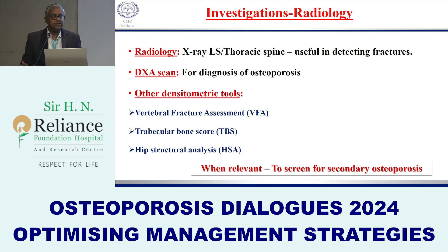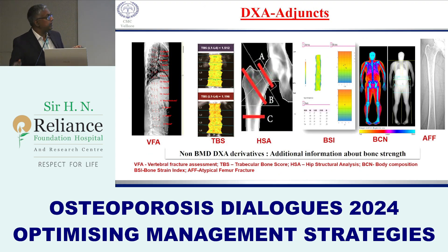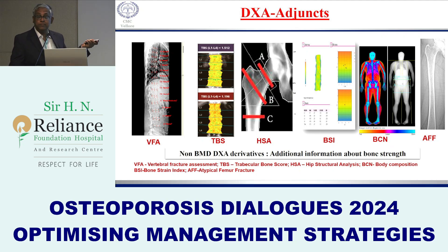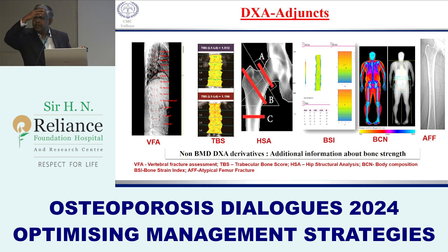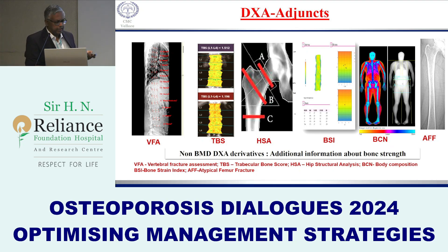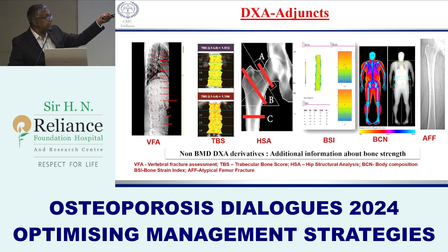In our center, for all women we perform vertebral fracture assessment using DEXA, along with BMD measurement, trabecular bone score (TBS), hip structural analysis, and bone strain index. We also do body composition to assess for sarcopenia — so bone, muscle, and fat are all evaluated together. For patients on bisphosphonates, we can also look for atypical fractures using single-energy DEXA.